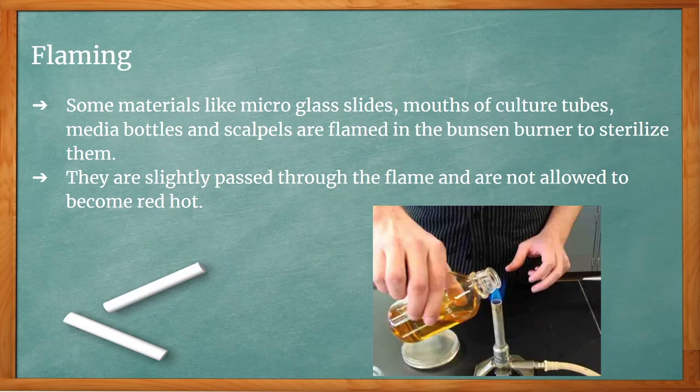Some materials like micro glass slides, mouths of culture tubes, media bottles, and scalpels are flamed in the Bunsen burner to sterilize them. They are slightly passed through the flame and are not allowed to become red hot. This is called flaming.